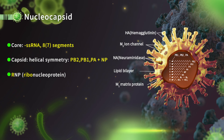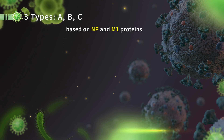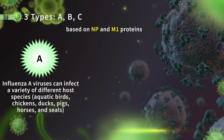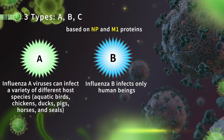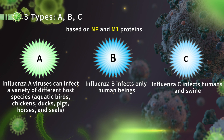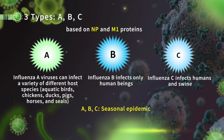Just beneath the envelope there is a matrix protein called M1. Based on NP and M1 proteins, the flu virus can be divided into three types: A, B, and C. Influenza A viruses can infect a variety of host species — aquatic birds, chickens, ducks, pigs, horses, and seals. Influenza B infects only humans. Influenza C infects humans and swine. Types A, B, and C can cause seasonal epidemics; type A — and sometimes B — can cause worldwide pandemics.